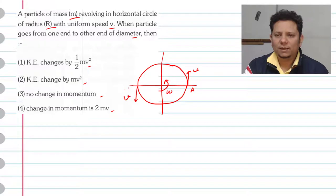So this point, let us say A to B is moved. At this point, kinetic energy will be equal to half mv square. At this point, kinetic energy will be equal to half mv square.